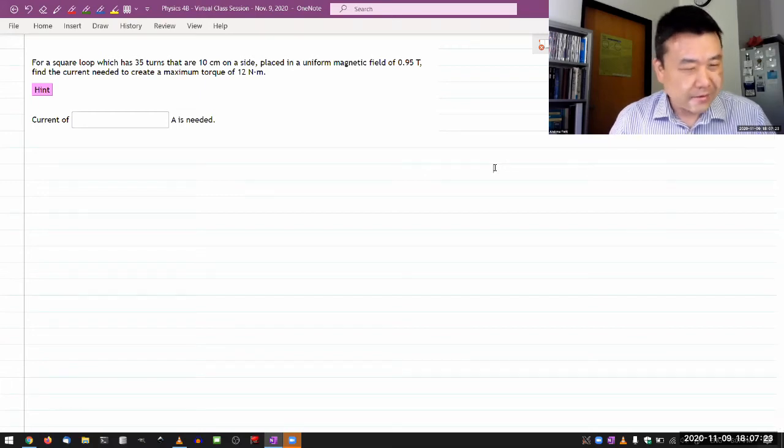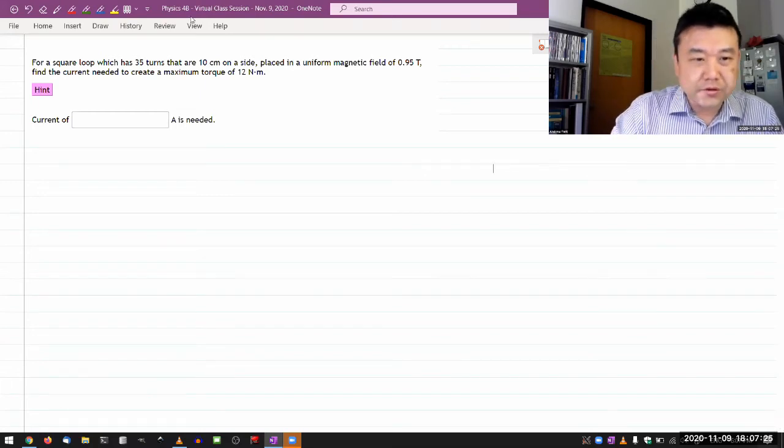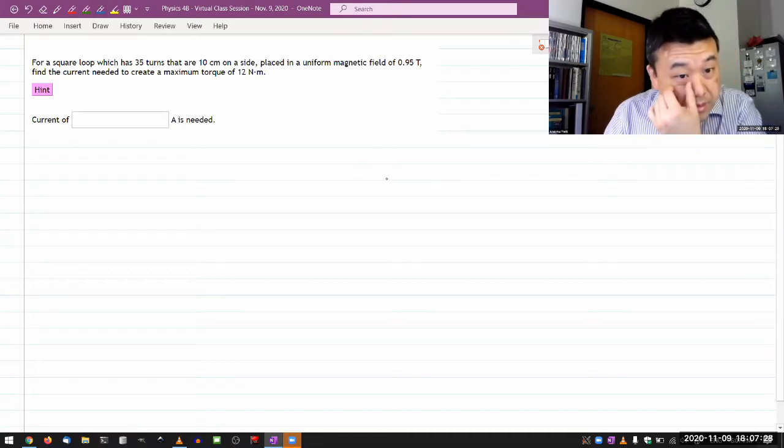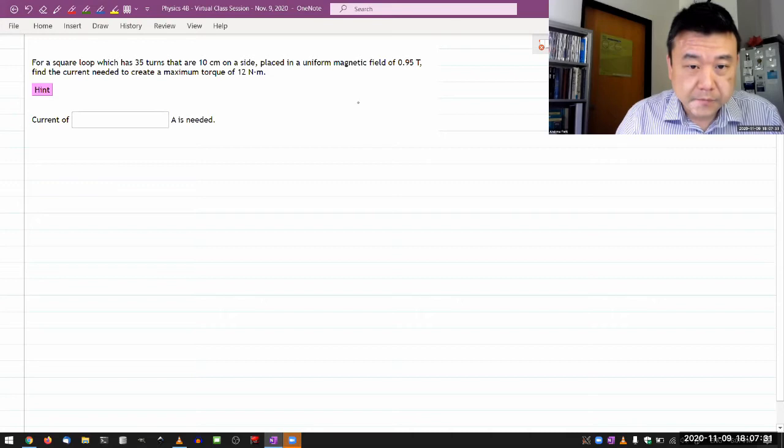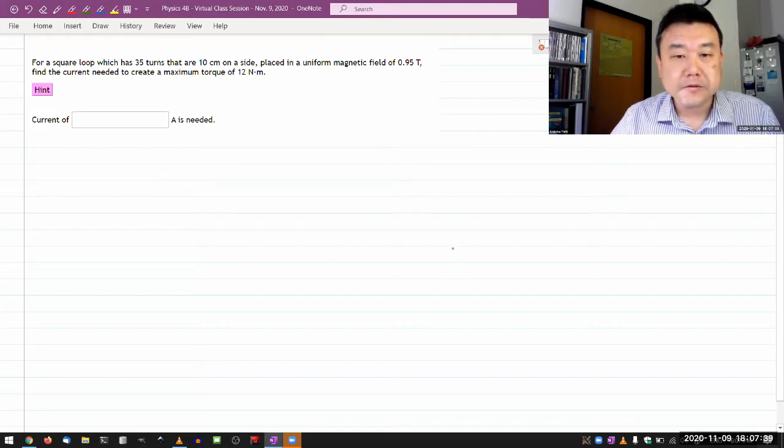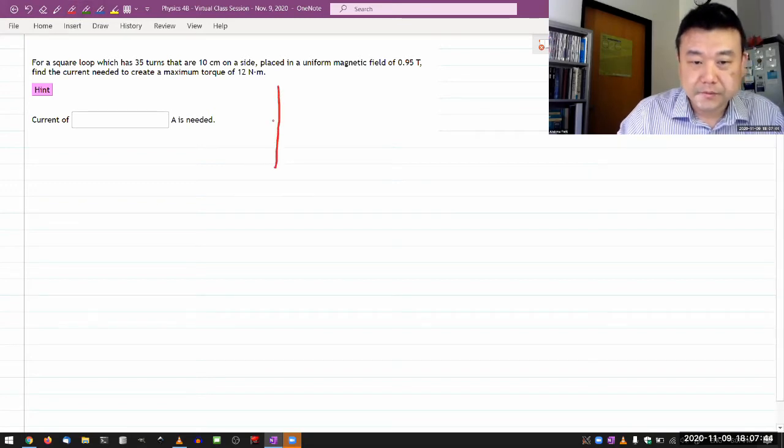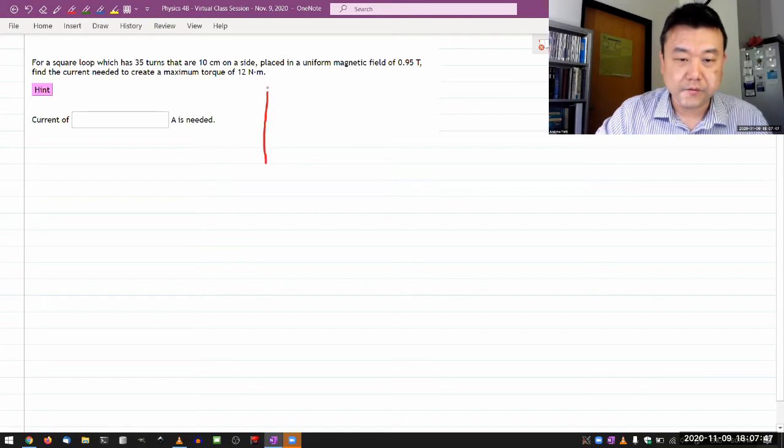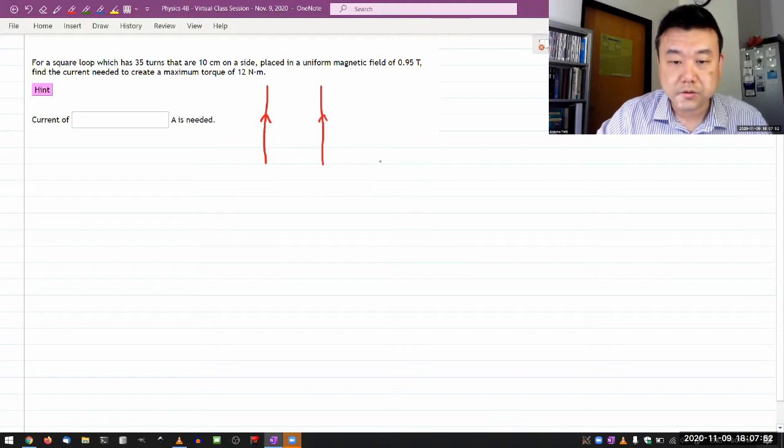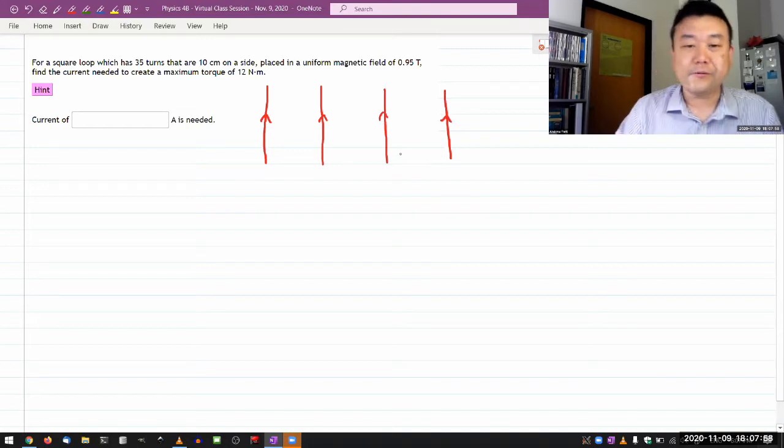So it says, it doesn't have any pictures. So let me draw some pictures as I'm reading the question. It says for a square loop, it's going to be placed in a uniform magnetic field, find the current needed to create a maximum. So let me imagine a region of magnetic field. I like to draw it kind of vertically. The question doesn't constrain you anyway, so your own illustration of the magnetic field can be either way. I just like the vertical one. So let's say this is my magnetic field.